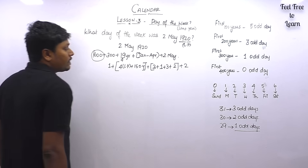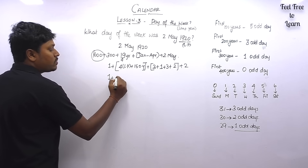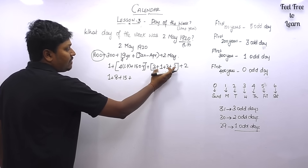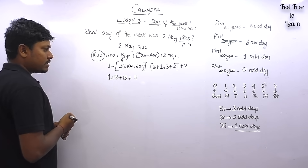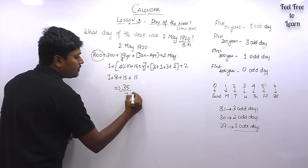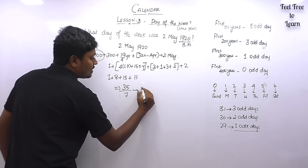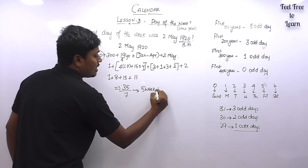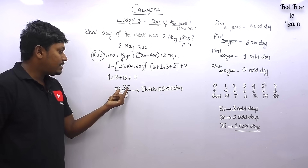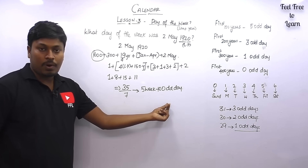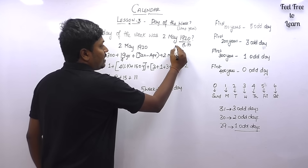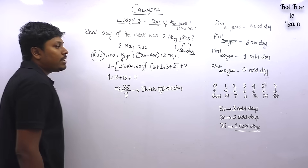Our target is 2nd May. Every leap year gives 2 odd days: 4 × 2 = 8. Every ordinary year gives 1 odd day: 15 × 1 = 15. Adding all values: 0 + 1 + 8 + 15 + 3 + 1 + 3 + 2 + 2 = 35. Dividing 35 by 7: 7 × 5 = 35, leaving 0 odd days. So 2nd May 1920 falls on the 0th odd day, which is Sunday. Sunday is the answer for question 4.